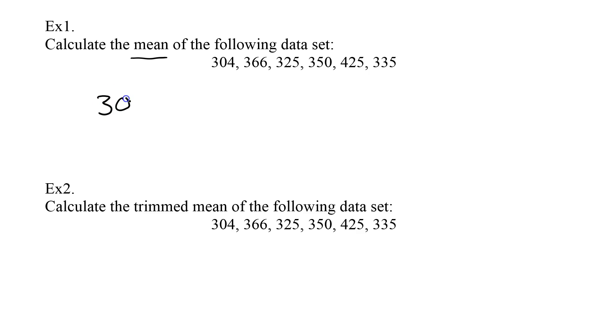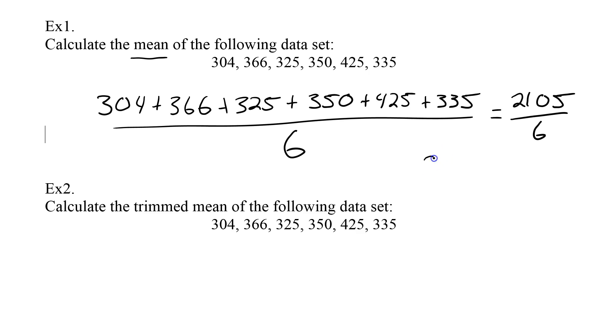We start with 304, we're going to add 366, plus 325, plus 350, plus 425, plus 335. Now remember when doing a mean, it doesn't matter if they are in order from large to smallest, as long as we add all these together. So we'll add them and then divide by how many values we have: 1, 2, 3, 4, 5, 6. So I'll divide by 6. I pull up my calculator and my addition is 2105. I'm going to divide this by 6 and I get an answer of 350.83, and the 3 repeats.